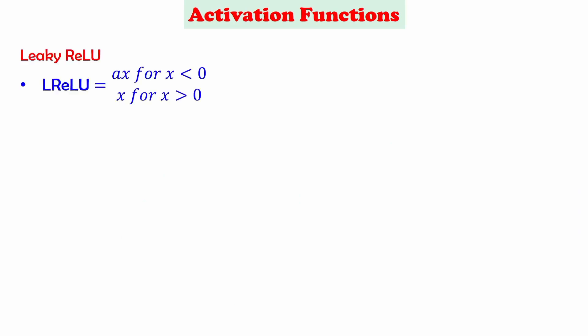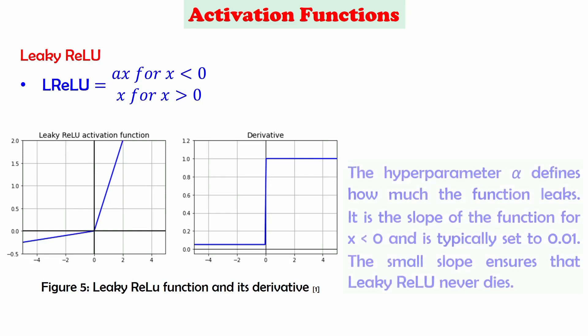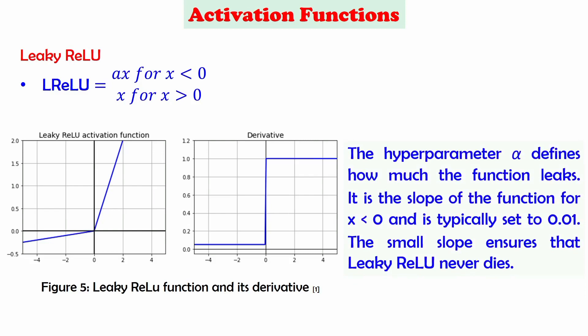The drawback of ReLU is that it suffers from the vanishing gradient problem for negative inputs. To overcome this, we have Leaky ReLU, given by a·x for x < 0 and x for x ≥ 0, where x is the input and a is a constant. The graphical representation of Leaky ReLU and its derivative is shown in the figure. The hyperparameter a defines how much the function leaks — it is the slope for x < 0 and is typically set to 0.01. This small slope ensures that Leaky ReLU never dies, so the vanishing gradient problem is not encountered for negative inputs.